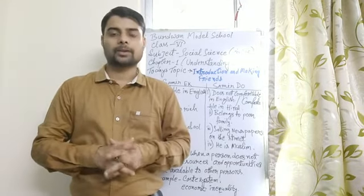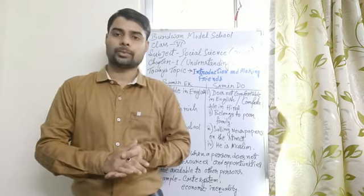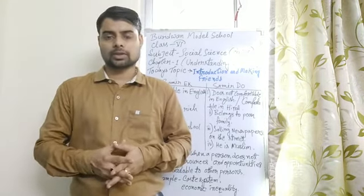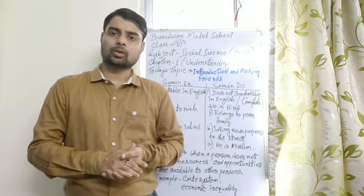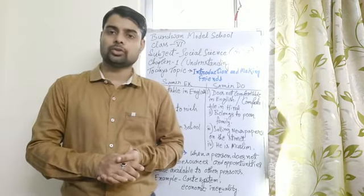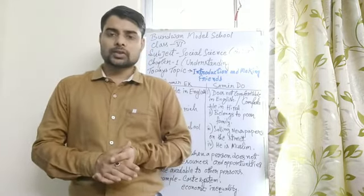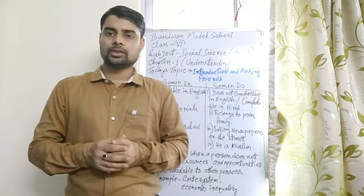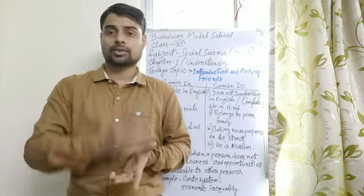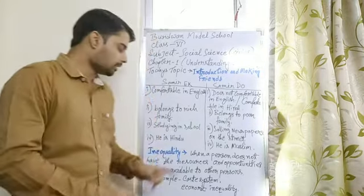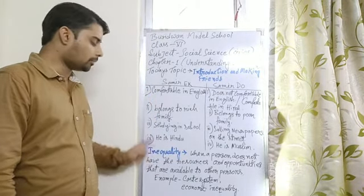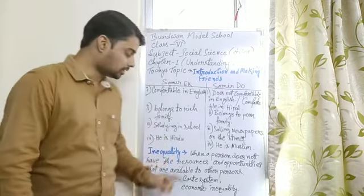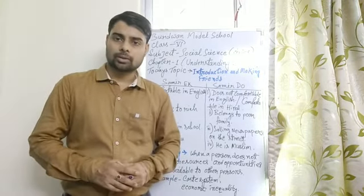In our society, some people don't have enough to eat, clothes to wear, or money to build houses, and many people do not get the opportunity to go to school. These things — as seen in the Samir Ek and Samir Do story — are not called diversity. These differences are actually called inequality: when a person does not have the resources and opportunities available to other persons. Examples include the caste system and economic inequality in Indian society.